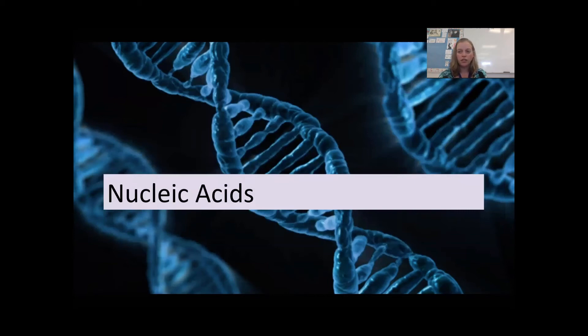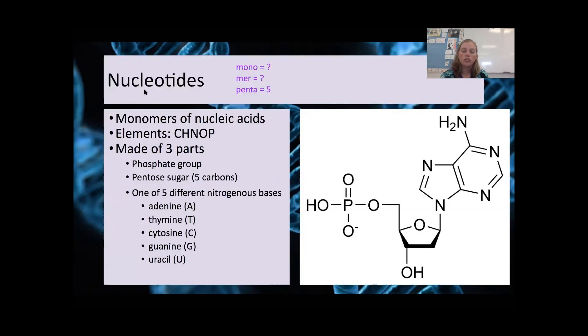All right, so now we're going to cover nucleic acids. So the monomer for a nucleic acid is called a nucleotide. They use the elements carbon, hydrogen, nitrogen, oxygen, and phosphorus, and they have three parts.